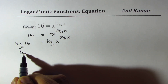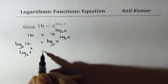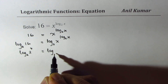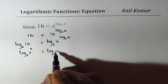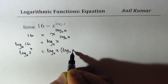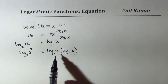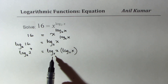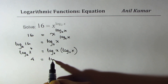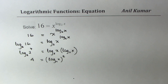Now log to the base 2 of 16 is 4, since 16 can be written as 2 to the power of 4. Applying the power rule on the right side, we get log to the base 2 of x times log to the base 2 of x. This is a very interesting step — on the right hand side we have the square of log to the base 2 of x. So we get 4 on the left side and log to the base 2 of x, whole squared, on the right side.